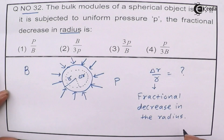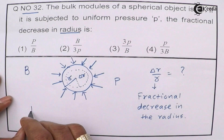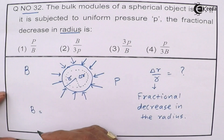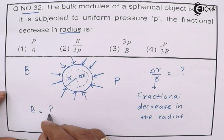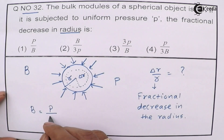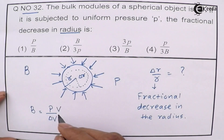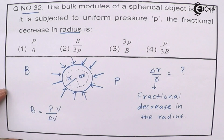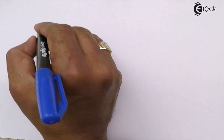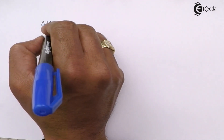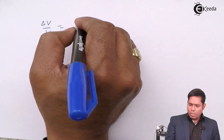We know that the bulk modulus is defined by the formula: B equals the change in pressure divided by the volumetric strain, which is the change in volume upon original volume. So delta V upon V can be written as P over B.